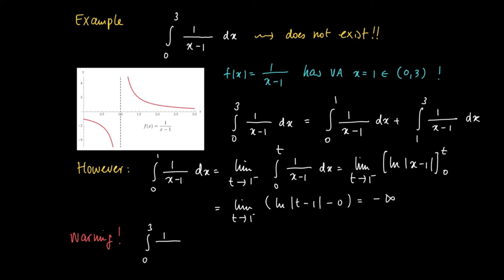But be warned, if you disregard the fact that 1 is in the middle of 0 and 3 and causes problems, then you might be tempted to just calculate the integral from 0 to 3 by evaluating the primitive ln absolute value of x minus 1 with the bounds of 3 and 0. In that case, you would obtain the number ln 2, right? But this is obviously wrong.